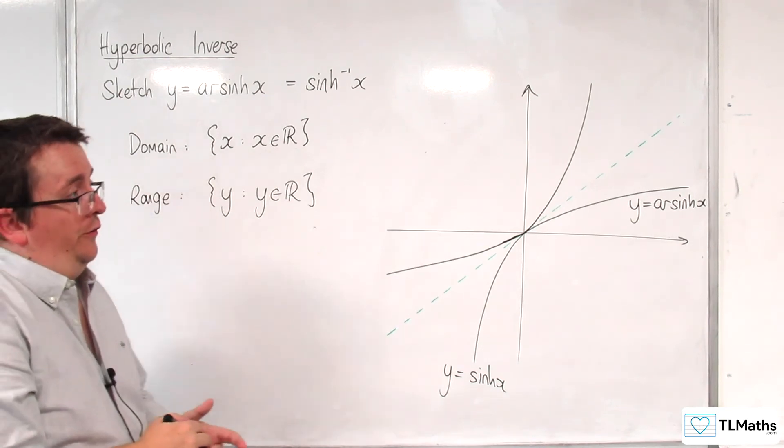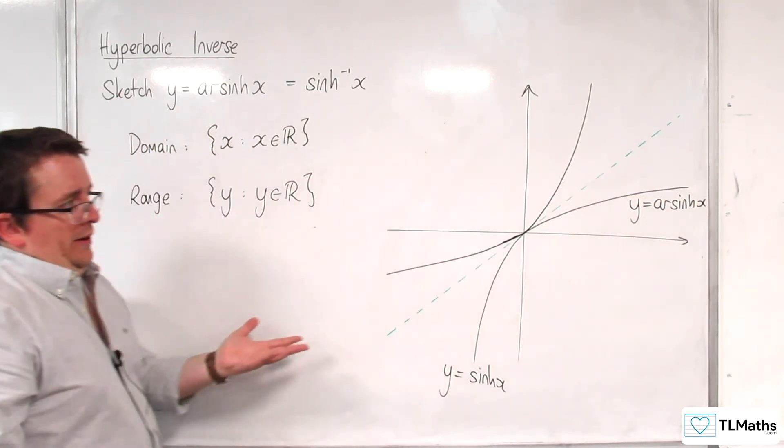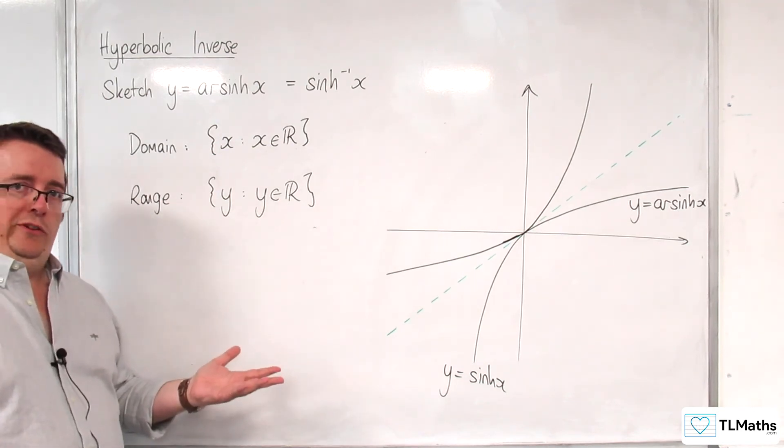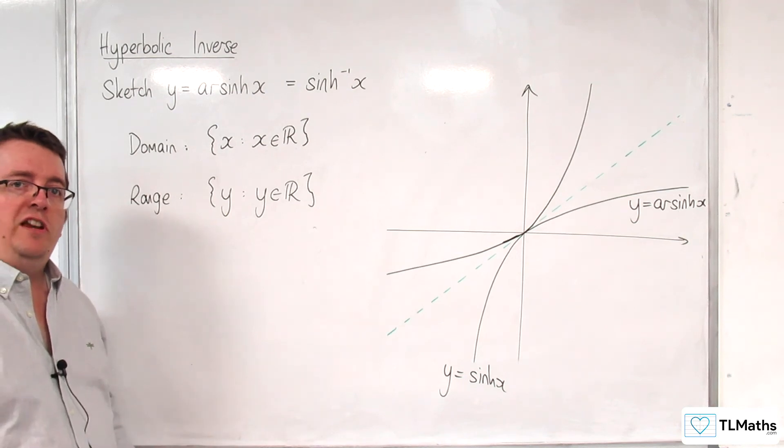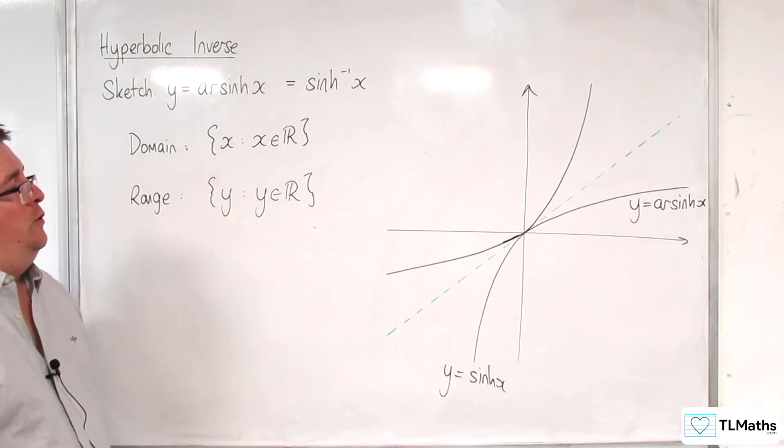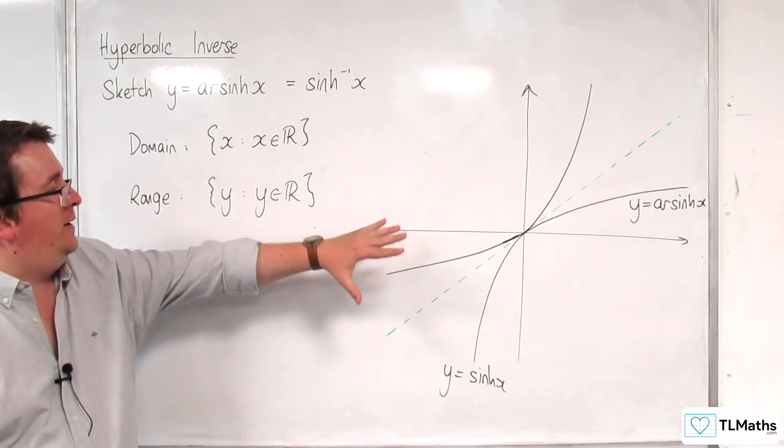Now, it looks kind of like it's going to start plateauing, but just like y equals log x, it continues to increase, but slower and slower and slower. So this is what y equals arsinh of x looks like.